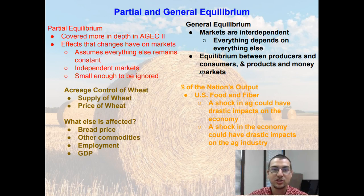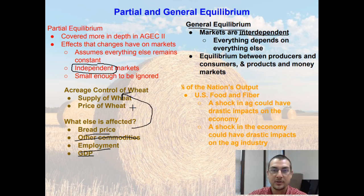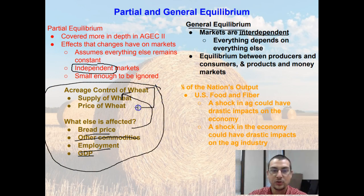Now, if we compare that to general equilibrium, general equilibrium is where markets are interdependent. In partial equilibrium they're independent, but with general equilibrium they're interdependent — meaning that everything depends on everything else. We know that other commodities, price of bread, unemployment, and GDP are all going to be affected by acreage control of wheat. So with general equilibrium, we look at how all of this is affected, not just one individual market.